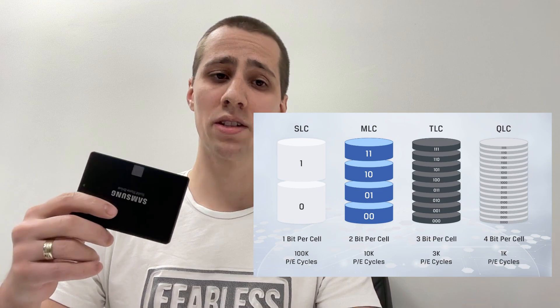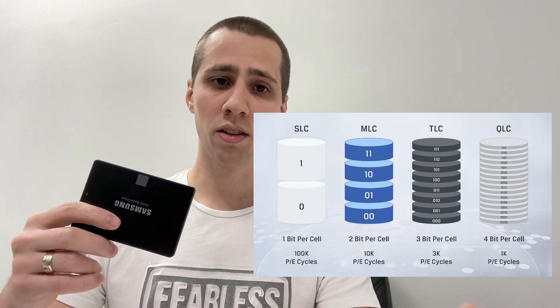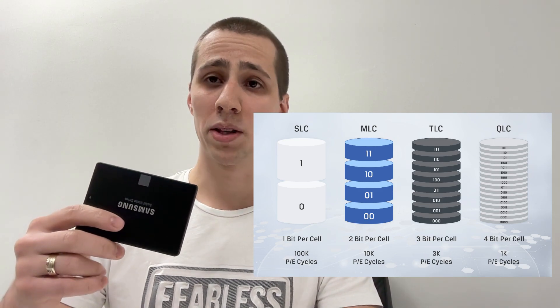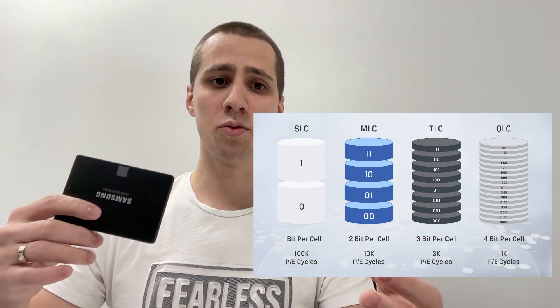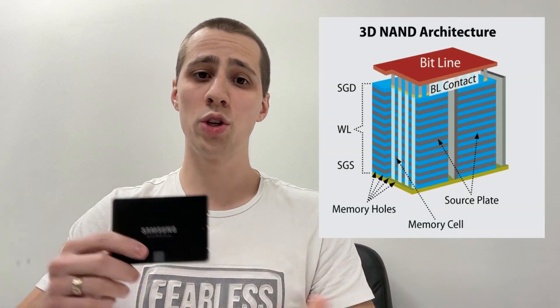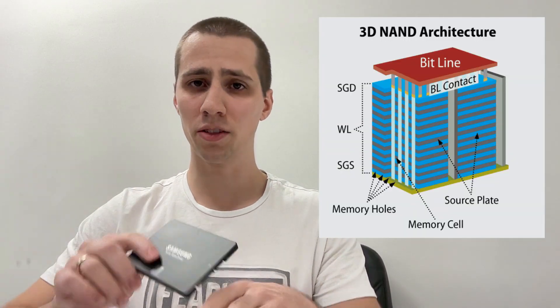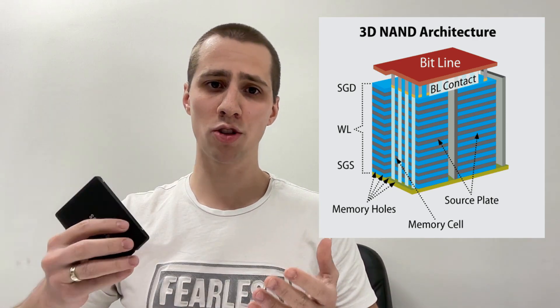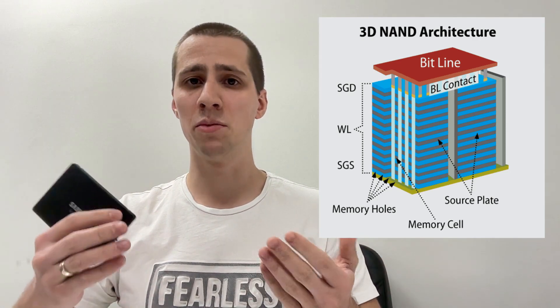Generally, storing more bits in a single cell reduces the overall speed and longevity of the SSD, but provides higher data density, allowing for larger capacity drives to be made at lower costs. PLC drives are currently under development and we may see even more bits per cell in the future. Another term you might encounter is 3D NAND or V-NAND, which indicates that the cells are stacked vertically instead of horizontally. This structure provides several benefits, the most important of which are improved endurance due to the larger cell size and higher storage density.